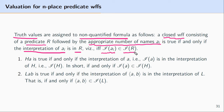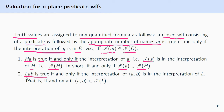Let's state this with a couple of examples. A formula like Ha, where H is a one-place predicate followed by one name, is true if and only if the interpretation of a is a member of the set picked out by the interpretation of H. Similarly, Lab is true if L is a two-place predicate followed by two names, if and only if the ordered pair of the interpretations of a and b is found in the interpretation of L.